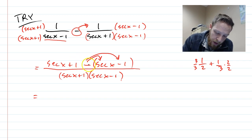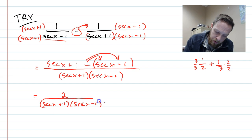but then one minus a minus one would be two. The whole top is going to simplify to that, and now we have secant x plus one, secant x minus one.